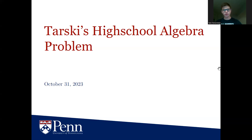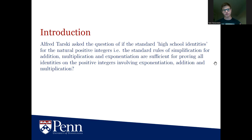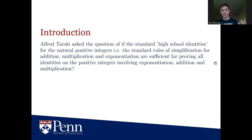Hello, everyone. This is a recording of a talk that I gave both at the University of Pennsylvania and also the Mathematics Discord server about Tarski's high school algebra problem. So let's get right into it. The idea is that Tarski asked if the standard high school identities — the rules of simplification we learn in high school — are sufficient for deriving all valid identities of the positive integers involving addition, exponentiation, and multiplication.